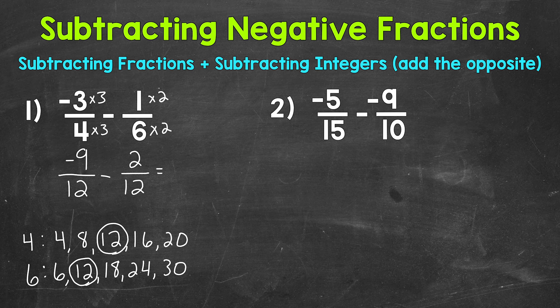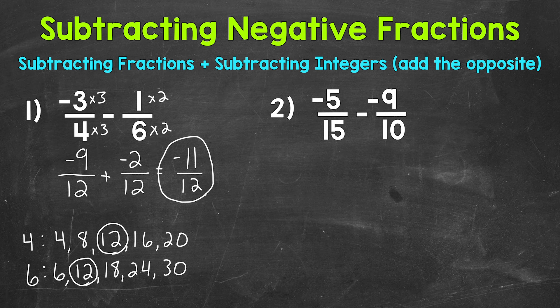So we are able to subtract. Just like when we subtract positive and negative integers, we can add the opposite. The opposite of positive two twelfths is negative two twelfths. Now we can add our numerators: negative nine plus negative two is negative 11. We keep our denominator of 12. Always check to see if you can simplify your answer — the only common factor between our numerator and denominator is one, so we are in simplest form. Our final answer is negative eleven twelfths.